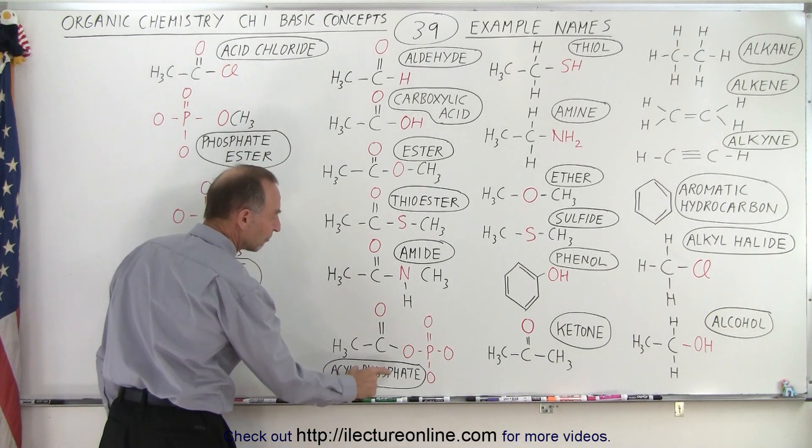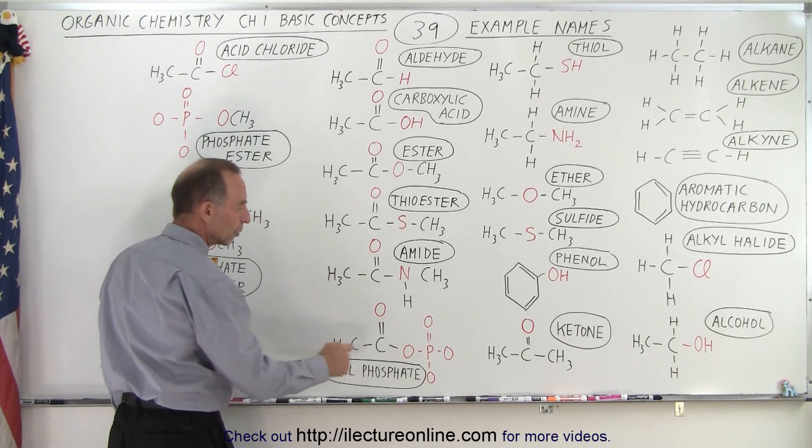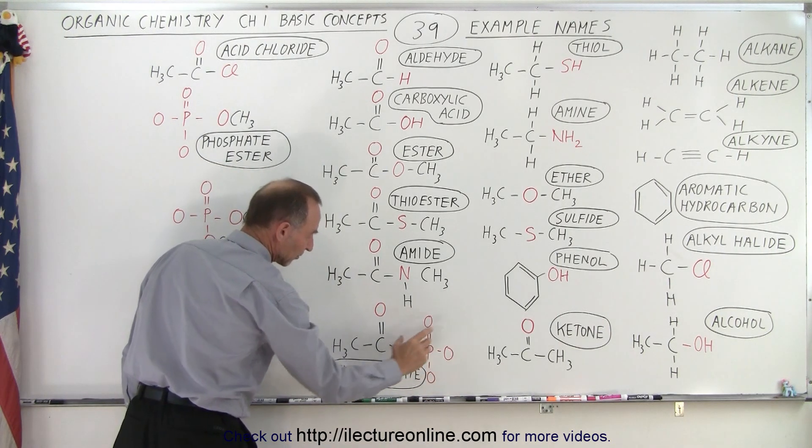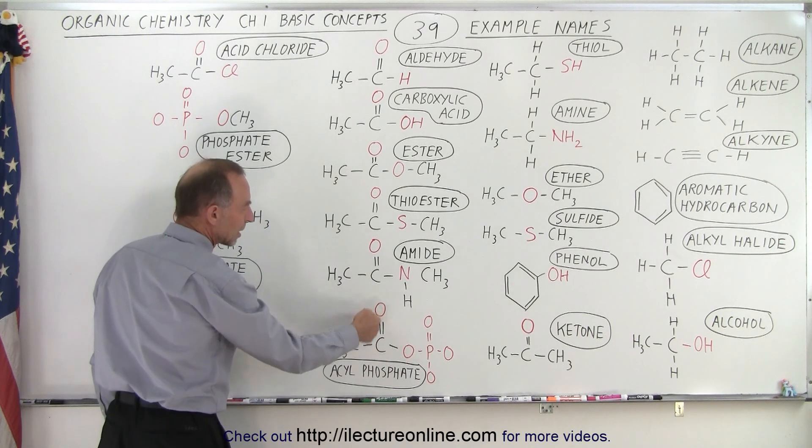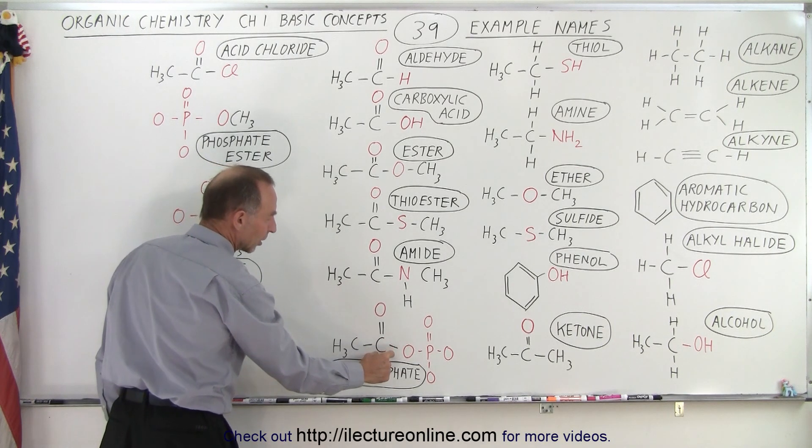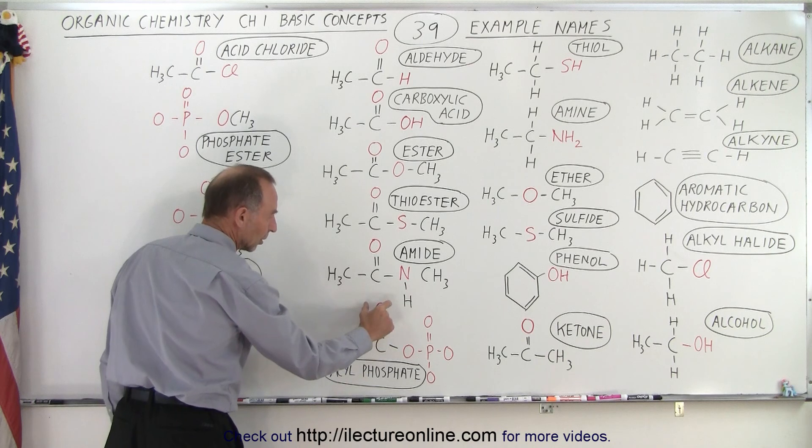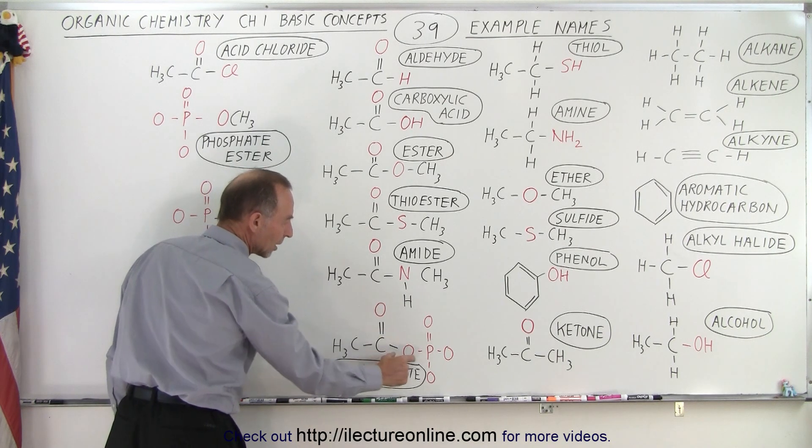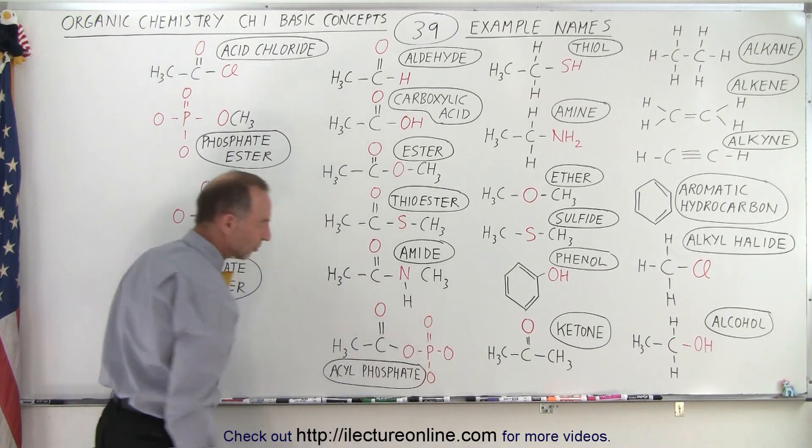Here we have an acyl phosphate. Notice that this is the phosphate group, that's where the phosphate comes from. And acyl, that is the oxygen double bond on the carbon, gives out the acyl functional group OC, and then we have the phosphate attached to it.